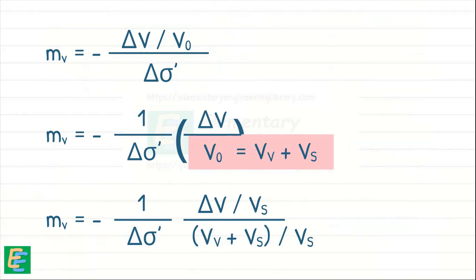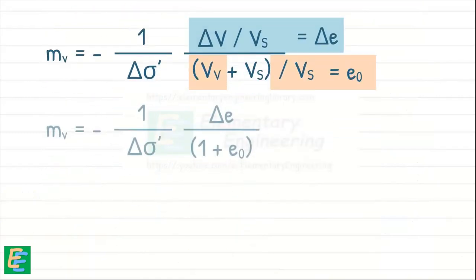We can see that in the numerator, delta V by Vs represents the change in void ratio, and in the denominator, volume of voids divided by volume of solids represents the initial void ratio of the soil. This is also an important relationship to remember.